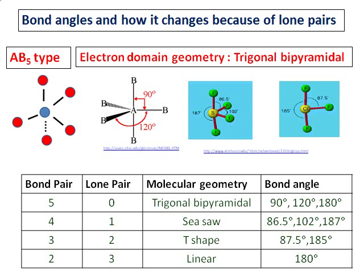With all five bond pairs and no lone pair, and then cases of four bond pairs and one lone pair, three and two, and two and three — the molecular geometry changes accordingly from trigonal bipyramidal to seesaw to T-shape to linear. The bond angles also change. What you need to remember is the bond angles for the perfect trigonal bipyramidal shape.